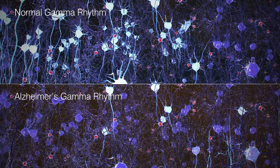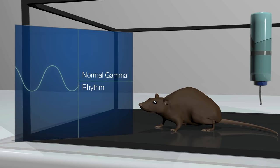Dr. Tsai's team established that the gamma rhythm amplitude at the 40 Hz range was reduced in mice with Alzheimer's disease, called 5XFAD mice.